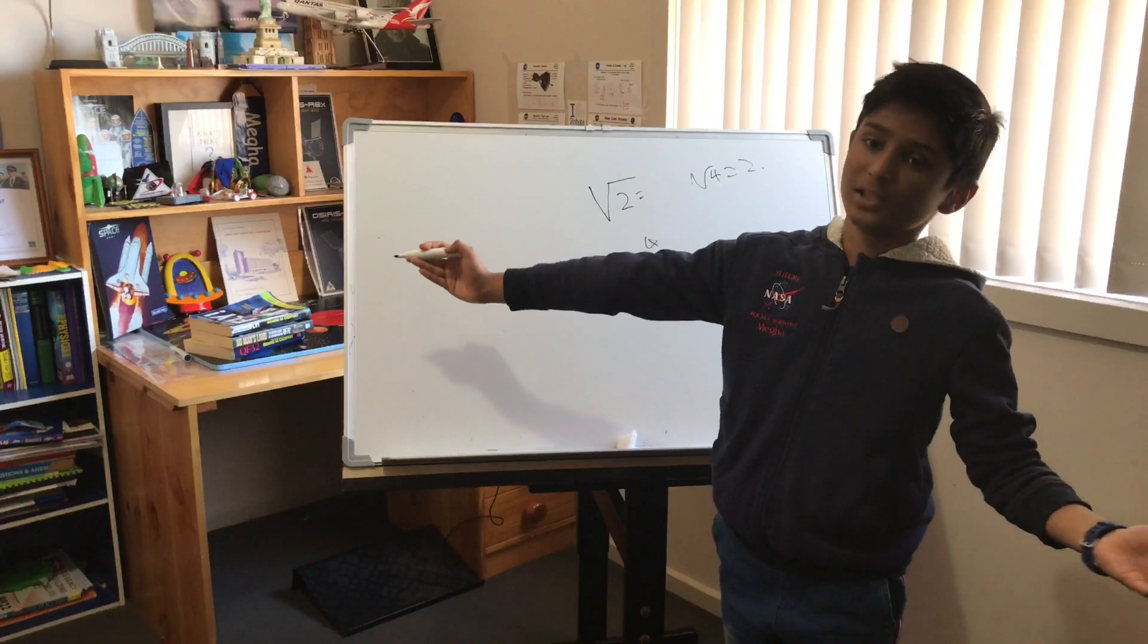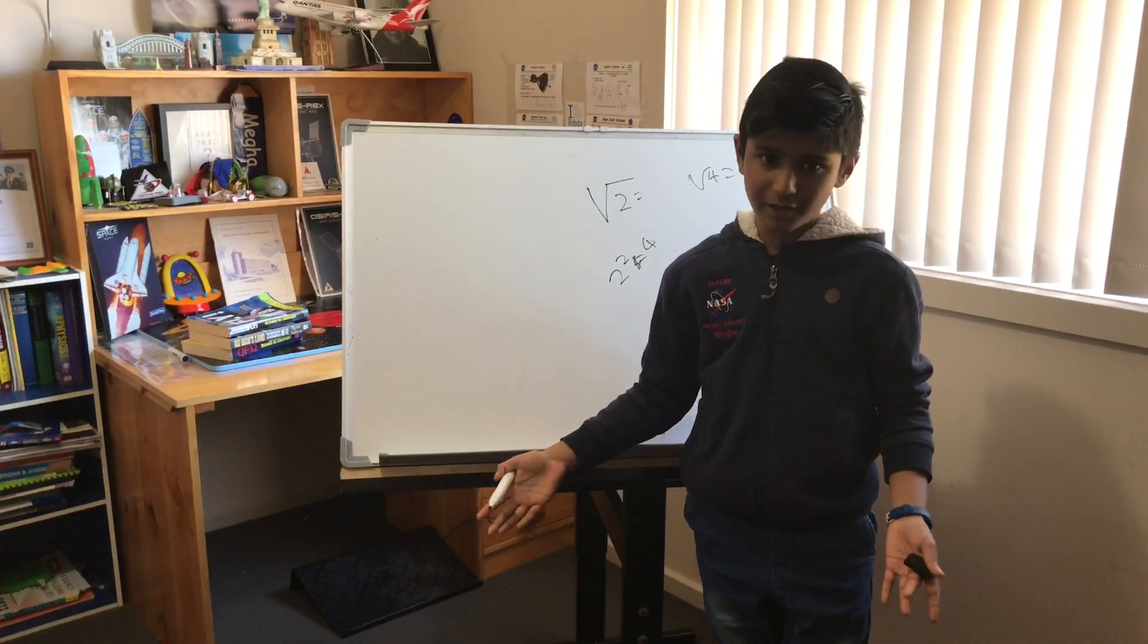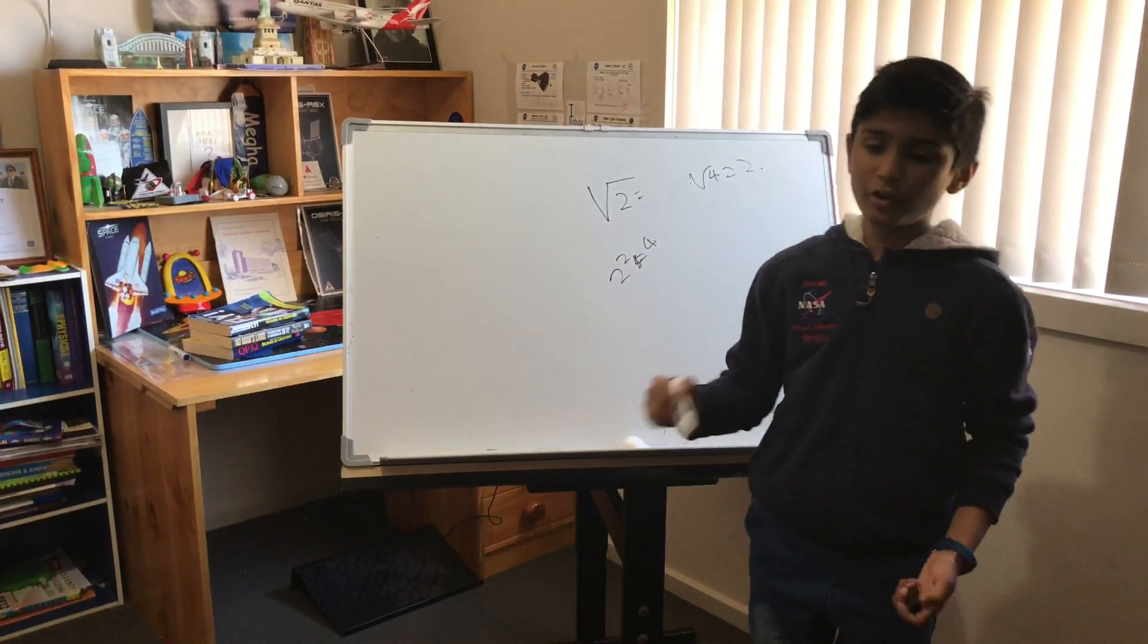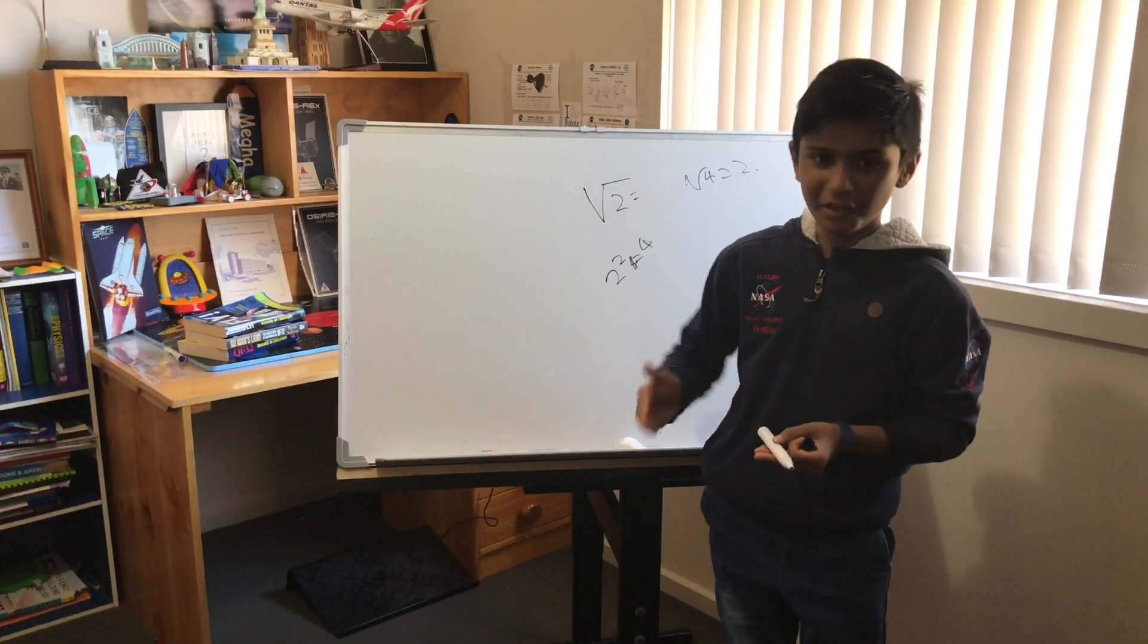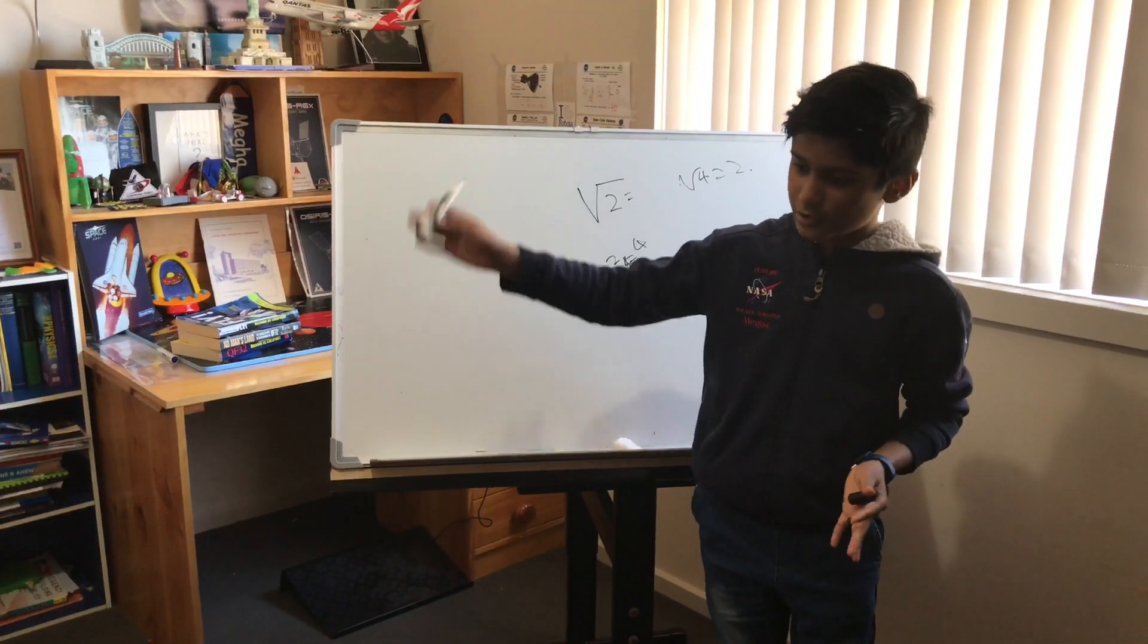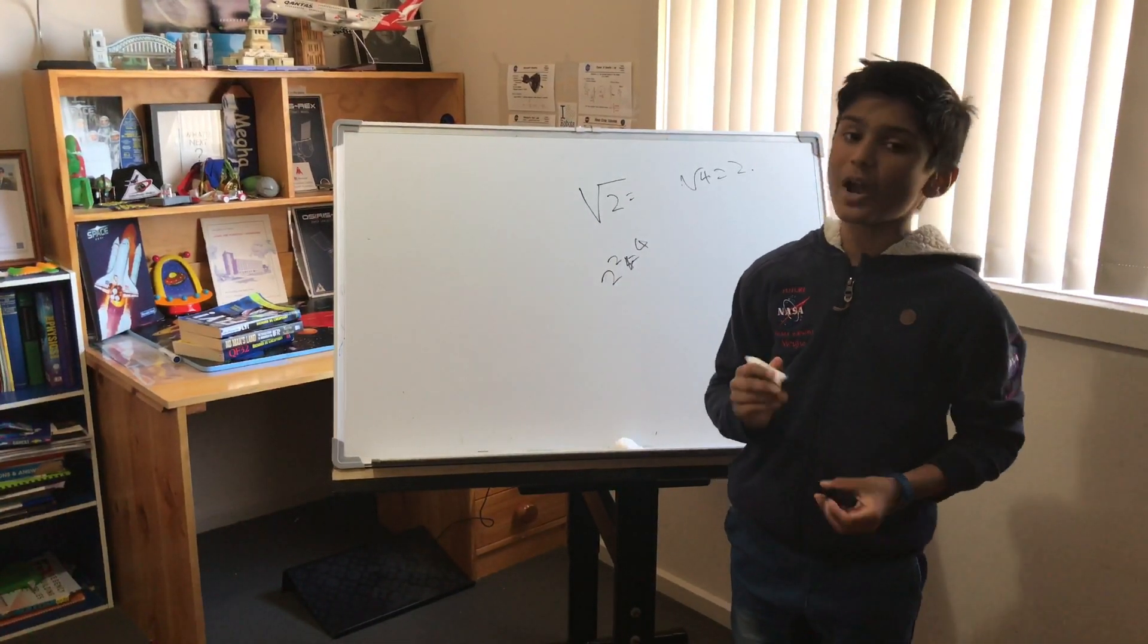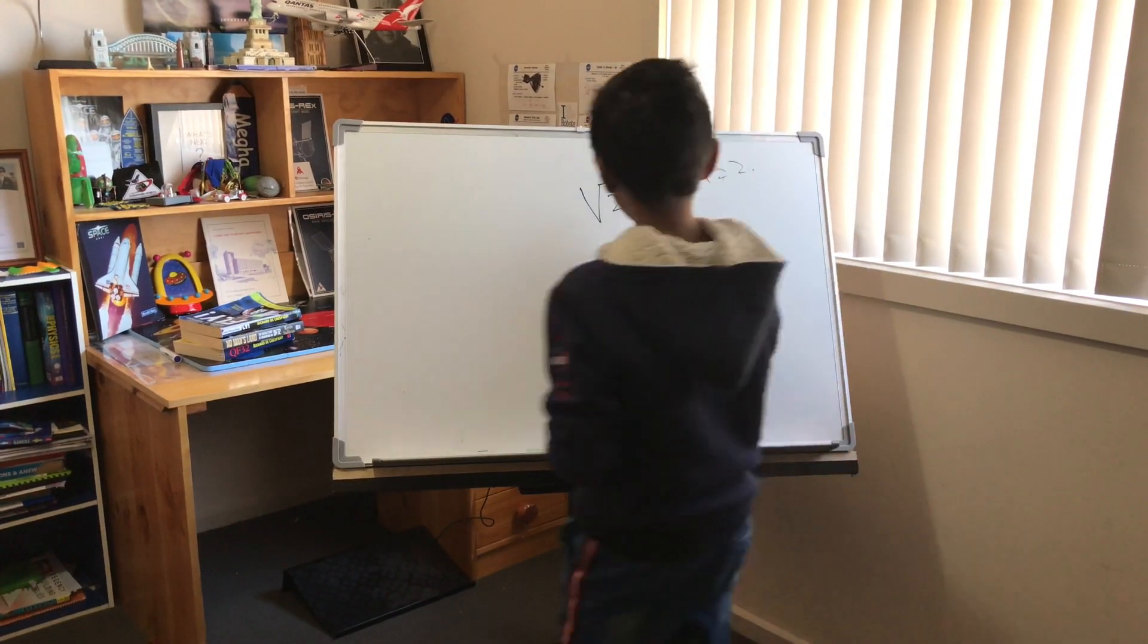It equals a humongous irrational number which you can see right here. It's an irrational number, which means it goes on forever. Look how these digits go on forever. Can you see that? It's called an irrational number.